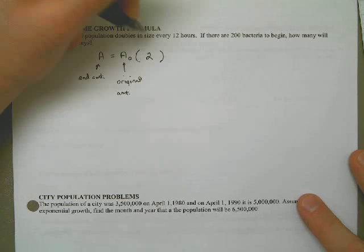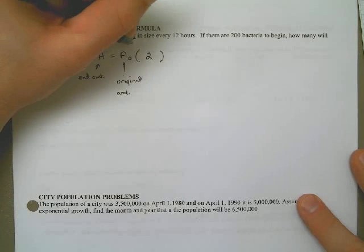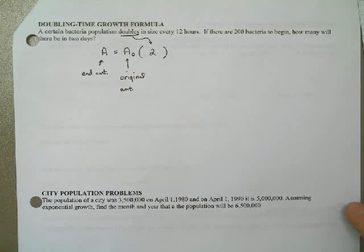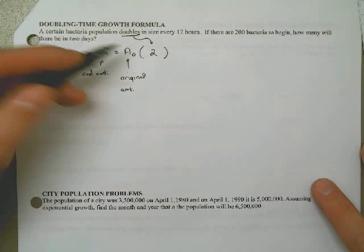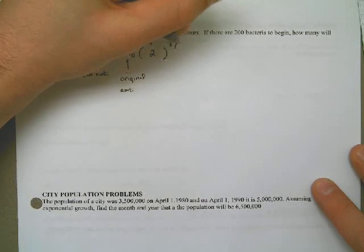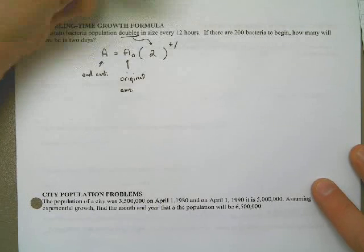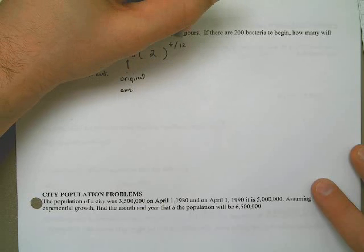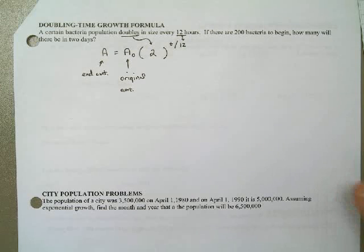we're going to say 2 because of the doubling. That's why I chose the number 2 here. If I would have seen the word triple, I would have used the number 3. And I'm going to raise that to the T divided by, in this case, 12. The reason I'm choosing 12 is strictly because it doubles every 12 hours. Here's the basic formula that we're going to use to figure out the population.